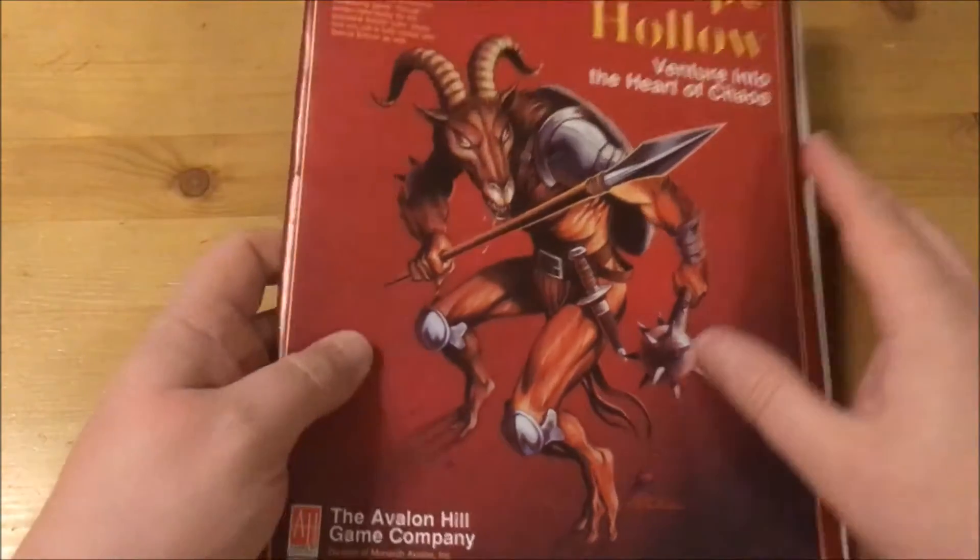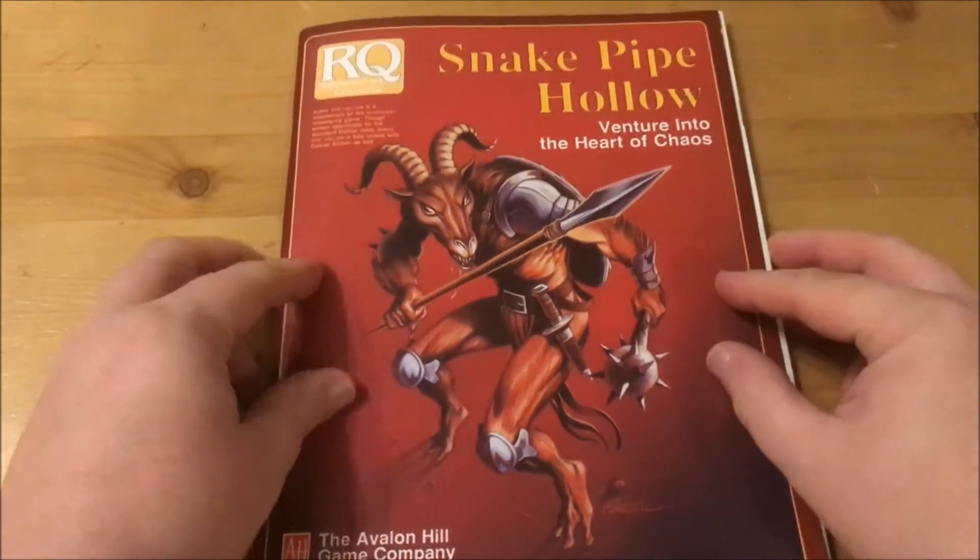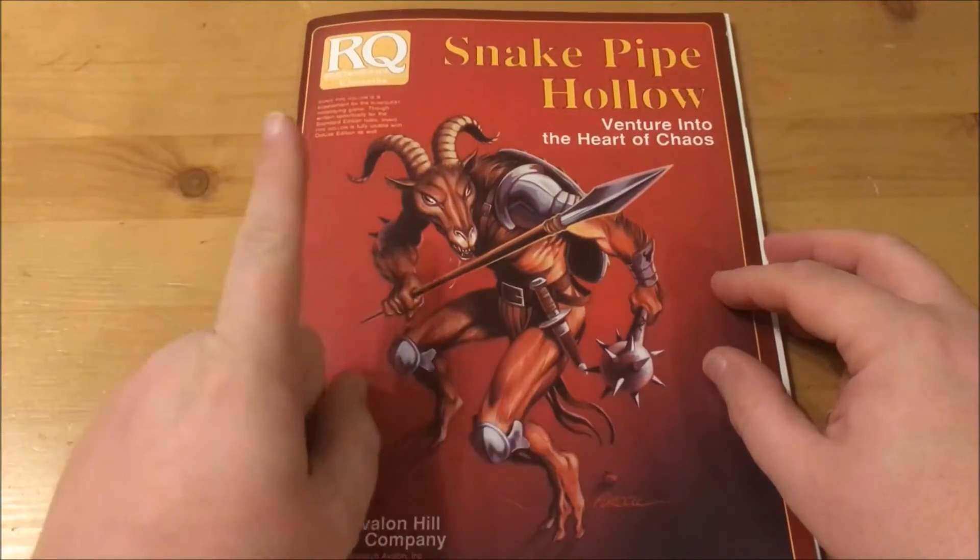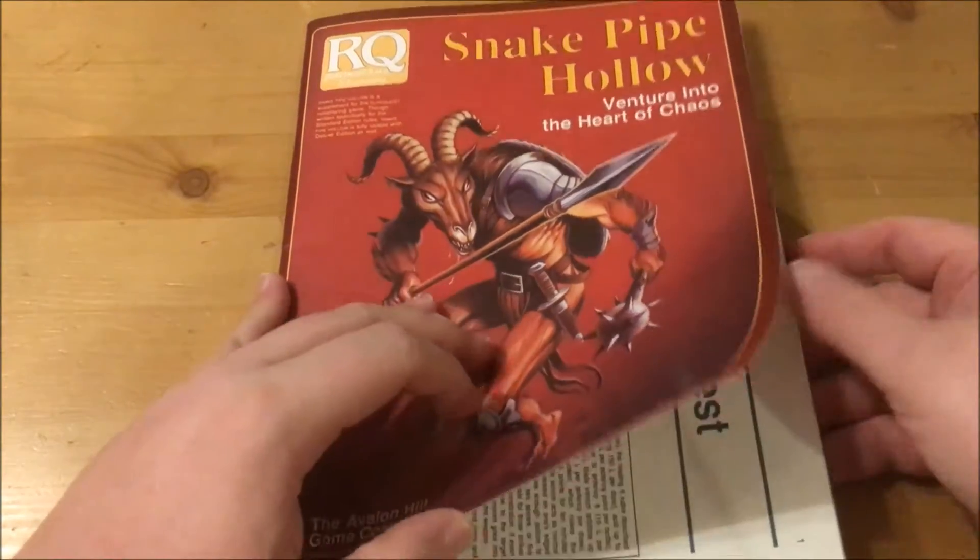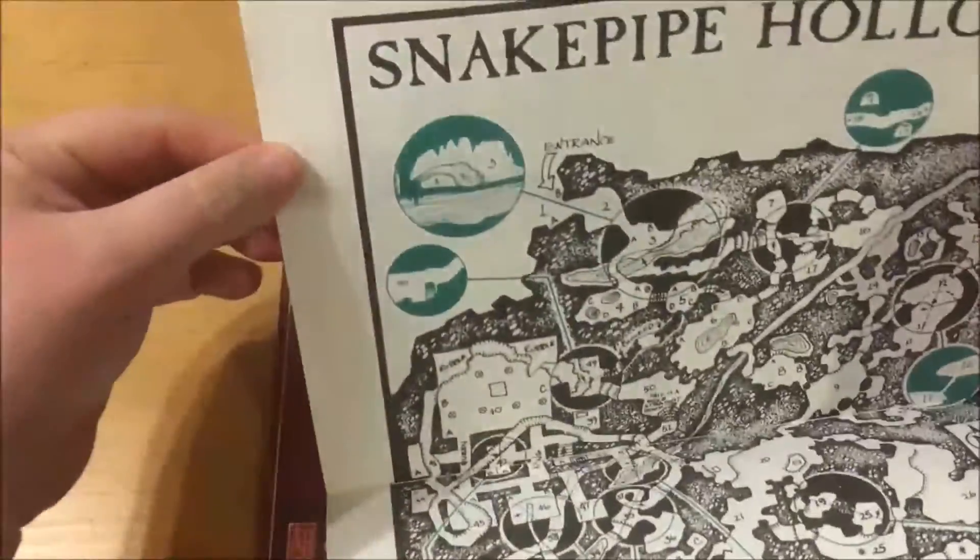Okay, to the book itself. The cover is another classic by Sam and Max creator Steve Purcell of the Broo priest Phyllis, more on him later. The book consists of a 56-page scenario and a 12-page pullout with lots of stats and information as well as a complete map of the hollow.